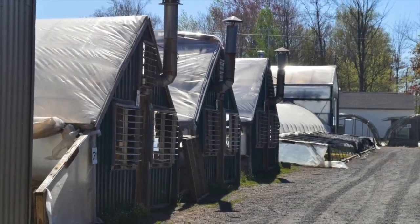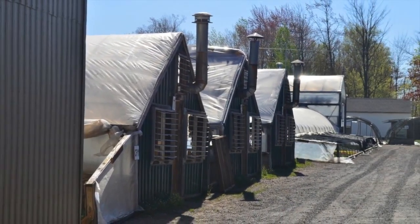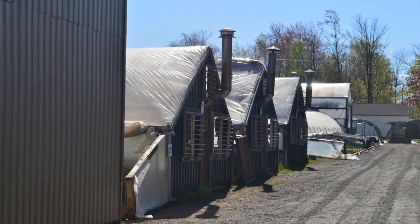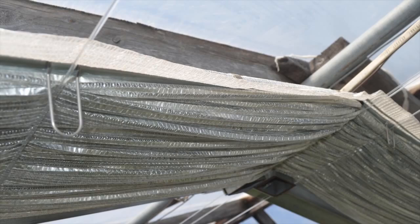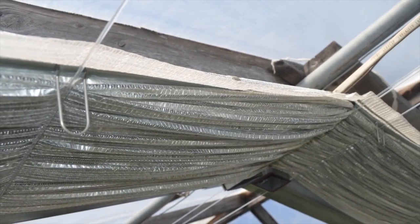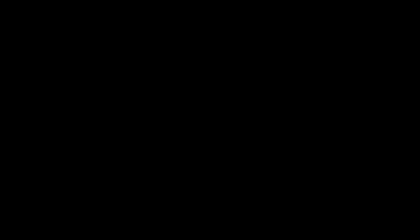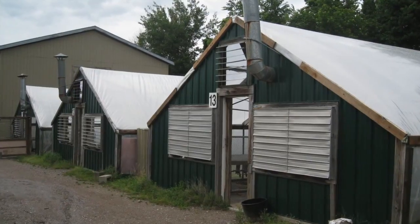Each greenhouse was covered with a double layer of plastic. One greenhouse, our control, had air blown between the plastic layers. One was fitted with an energy curtain that was drawn across the top of the crop in the evening. The remaining greenhouse had a novel system that filled the void between the two layers of plastic with tiny soap bubbles.